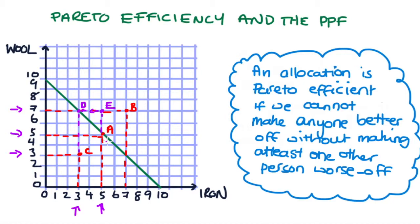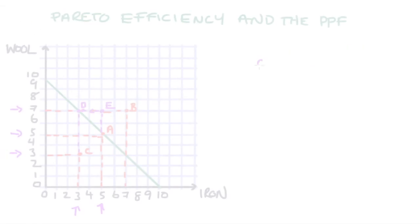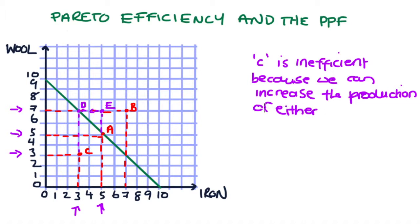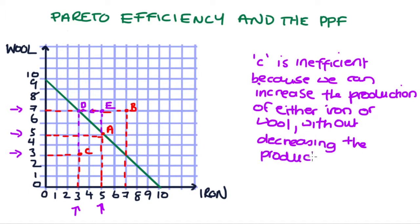We can tie this into the sense in which C is inefficient as well. So C is inefficient because we can increase the production of, I showed you wool, but we can do it with iron as well, without decreasing the production of, I showed in my example how we didn't have to decrease iron, but if we did it the other way it would be the opposite.